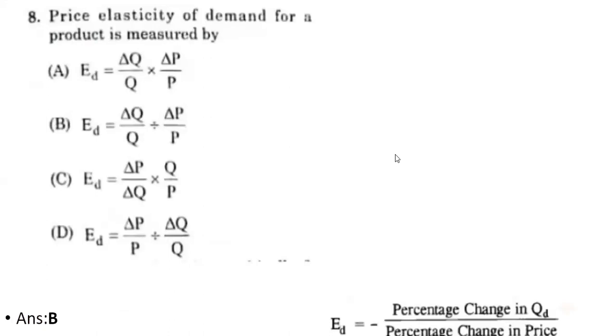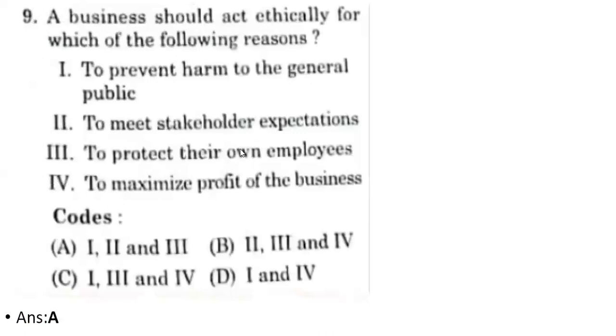Eighth question: the price elasticity of demand for a product is measured by B — that is (ΔQ/Q) divided by (ΔP/P). This means the percentage change in quantity demanded divided by the percentage change in the price of the commodity. Therefore for the eighth question the correct answer is B.